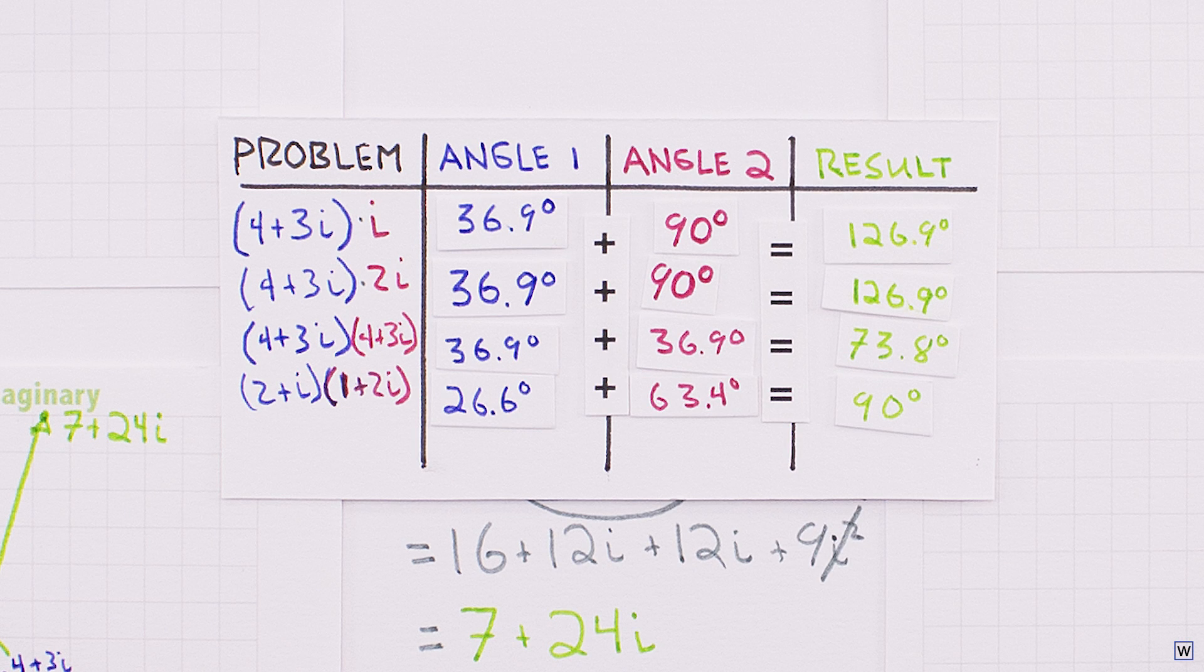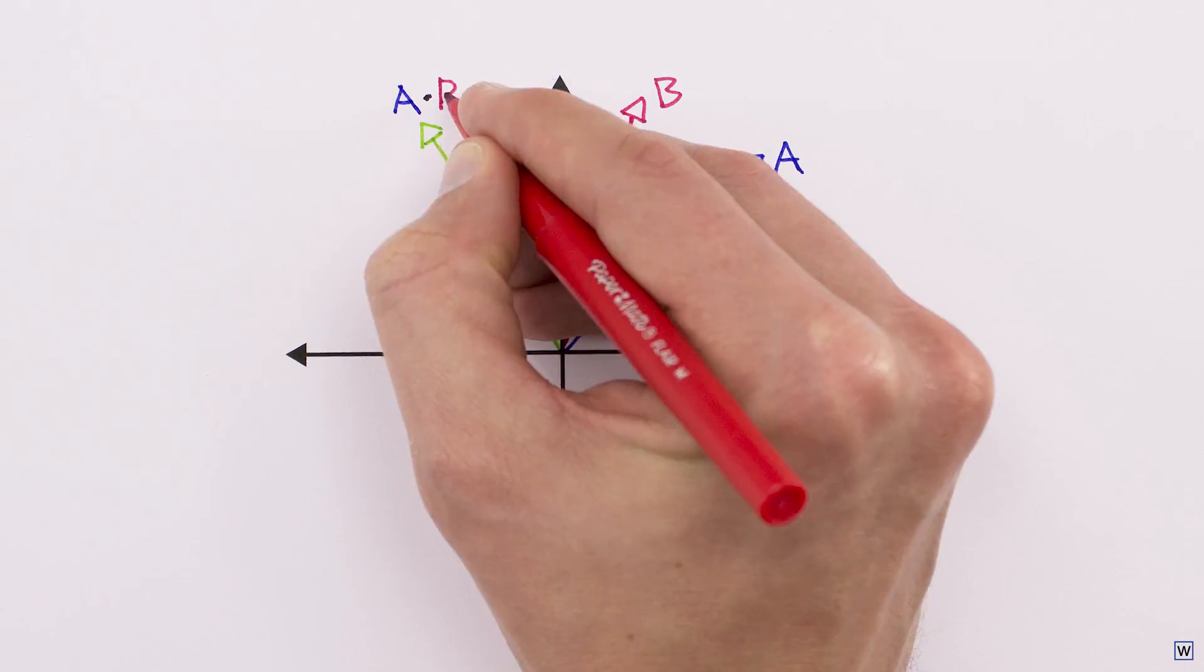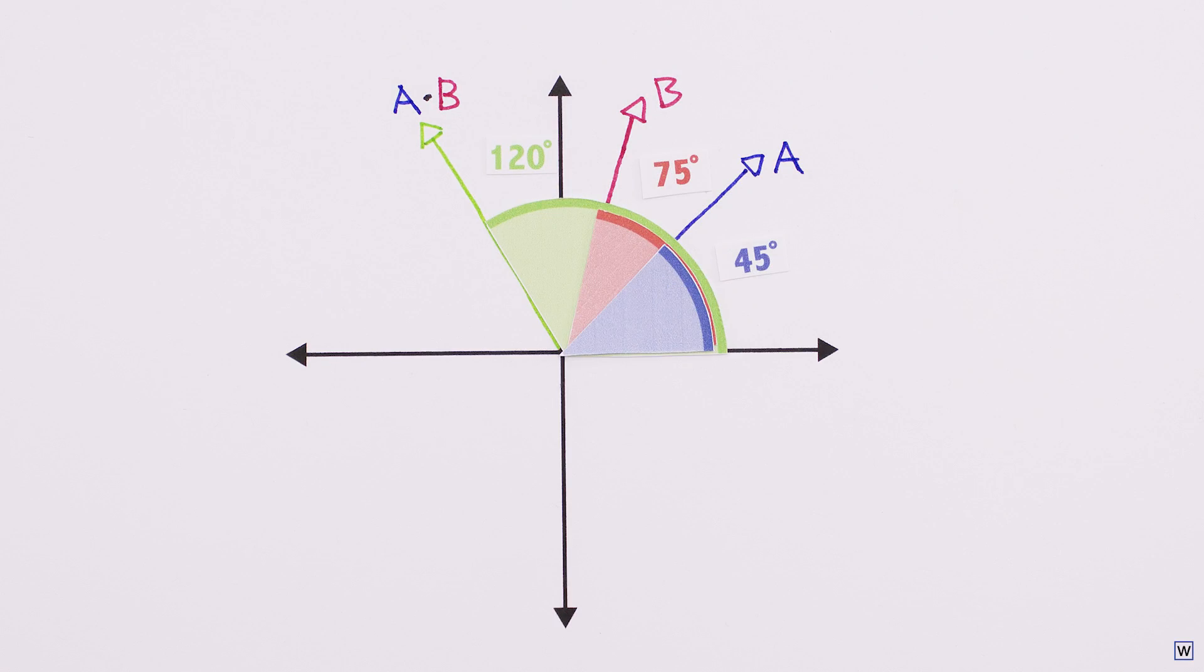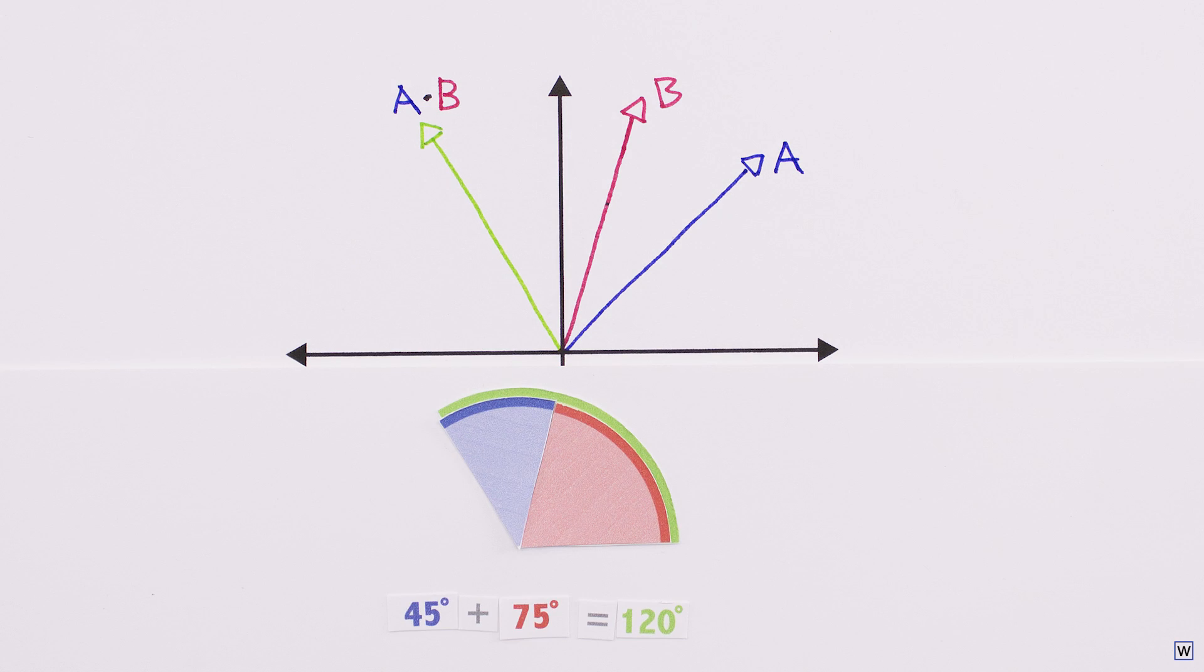This is the first half of the connection we're looking for. When multiplying on the complex plane, the angle of our result is equal to the sum of the angles of the numbers we're multiplying.